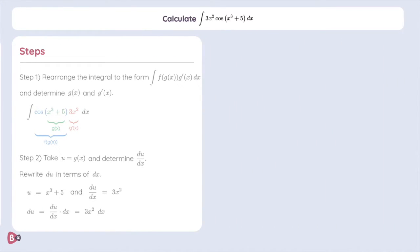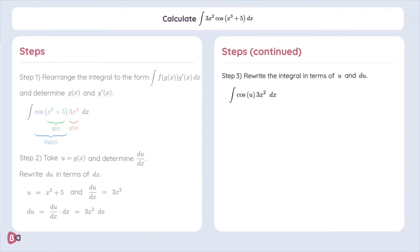For our next step, we have to rewrite the integral in terms of u and du. We do so and we obtain cosine of u times du. We can now integrate the cosine of u and this simply gives us sine of u plus c.